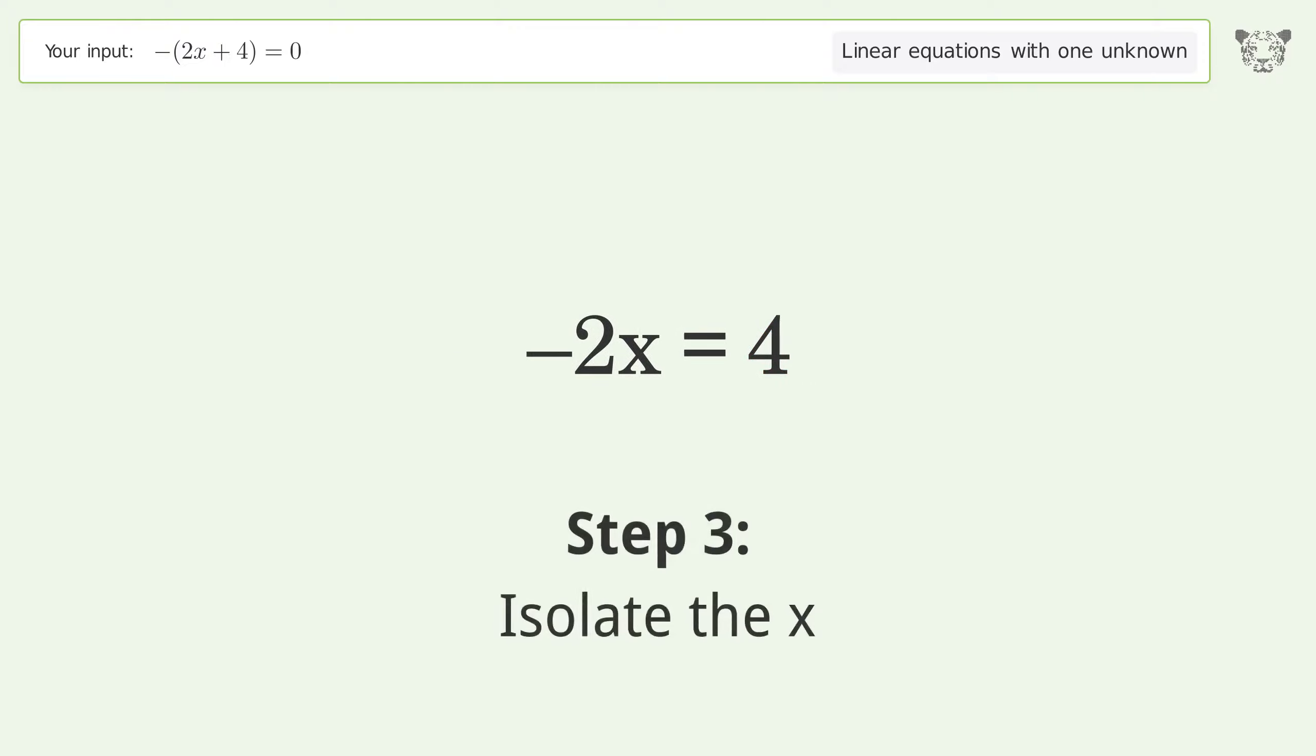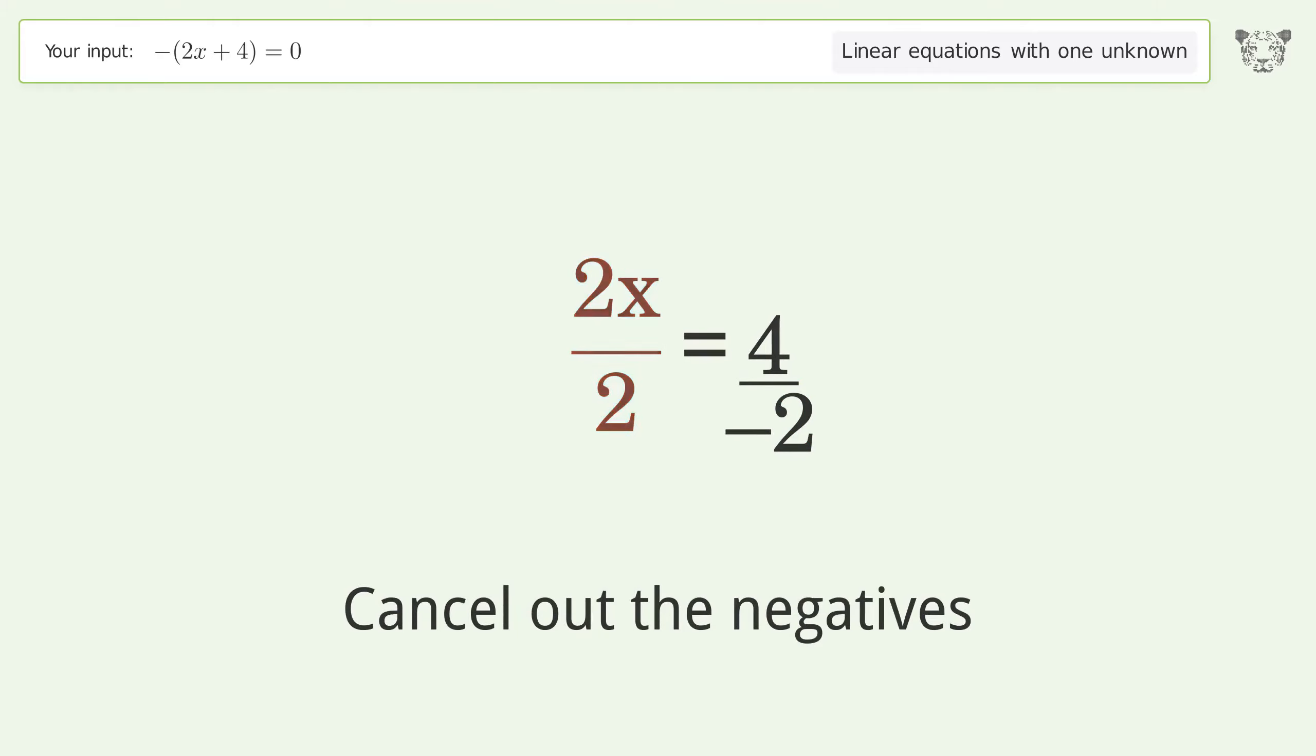Isolate the x. Divide both sides by negative 2. Cancel out the negatives. Simplify the fraction.